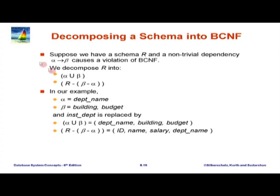Essentially we remove the replicated attributes. What we want is to keep the attributes of alpha in R. In case some attributes of alpha also occur in beta, we retain them. So what we remove is those attributes in beta which are not in alpha. R minus (beta minus alpha) means remove all those attributes of beta which are not in alpha. So all attributes of alpha remain in R, but the other attributes of beta go out. This is the formal definition allowing some repetition between alpha and beta.